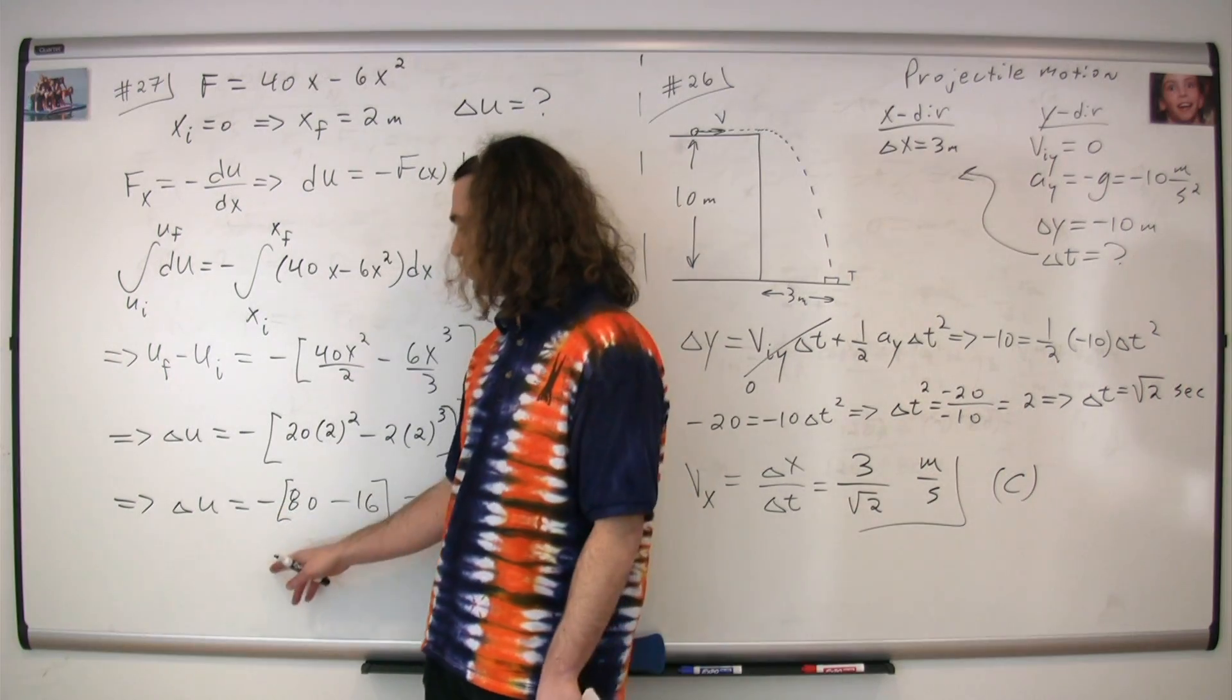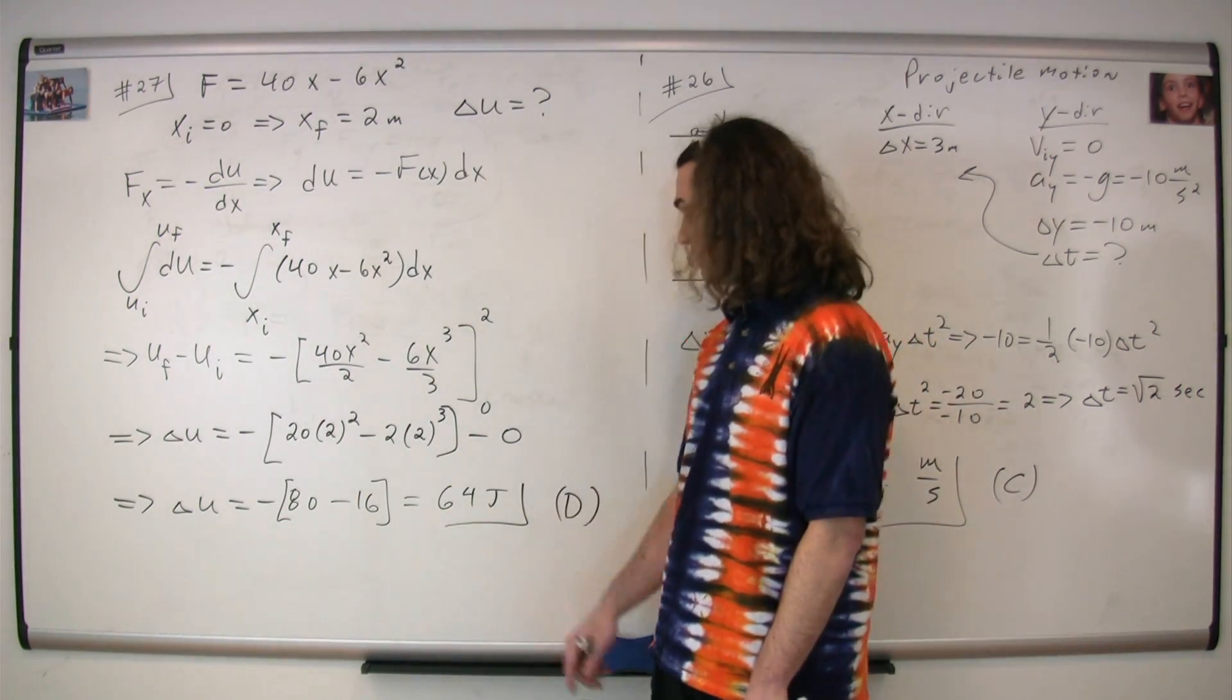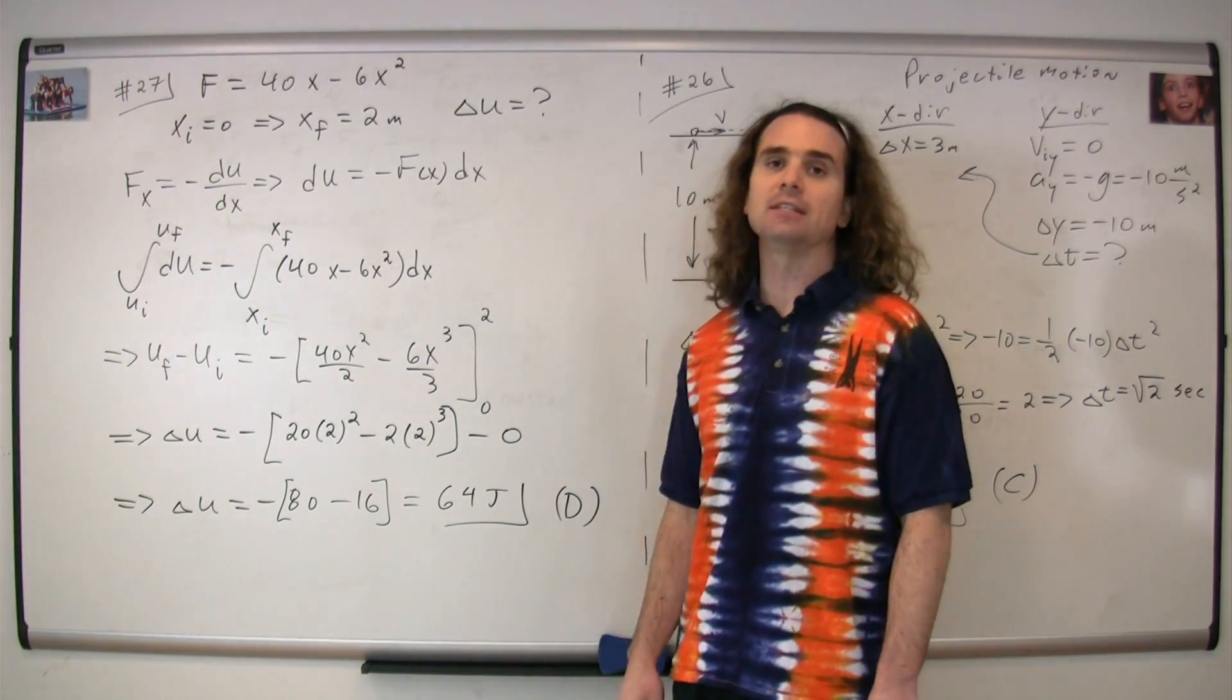So the change in potential energy equals the negative of the quantity 80 minus 16, which works out to be positive 64 joules. The correct answer is d.